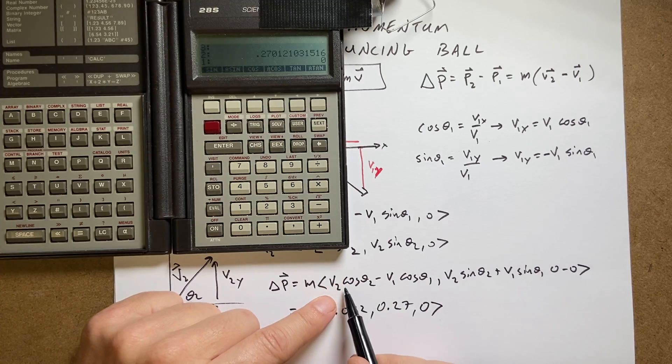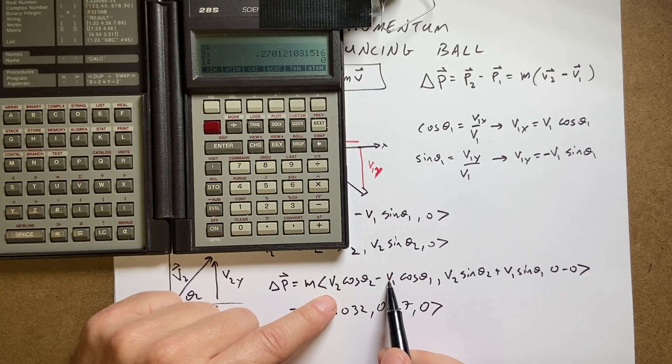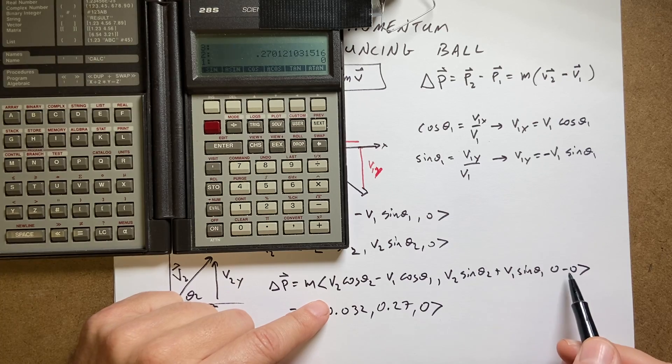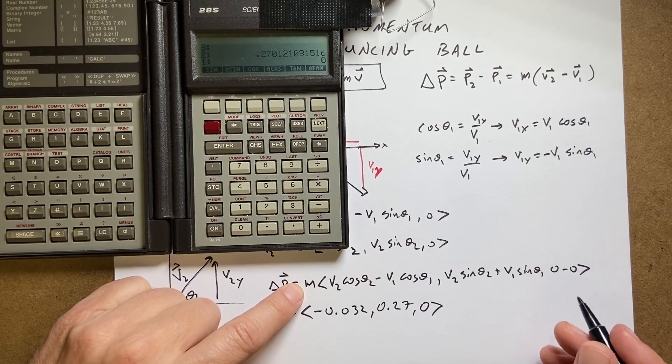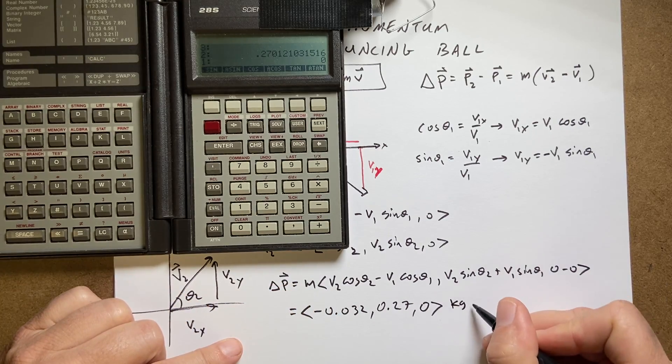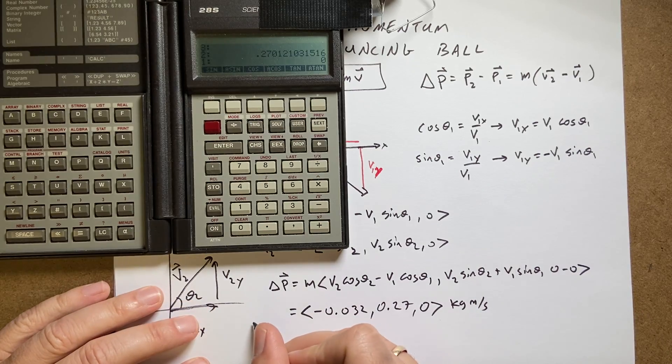Now the units. Cosine has no units. This is in meters per second. So each one of these is in meters per second. But then I multiply by kilograms. And I get kilograms meters per second. And that is my change in momentum.